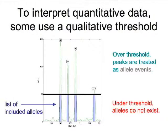How do we interpret quantitative data that has uncertainty? Some groups like to use quantitative thresholds. In that method, one threshold is applied to the data and peaks that are over threshold are treated as bona fide allele events. Those that are under threshold are discarded. The result is that the quantitative data is reduced to a list of alleles that are included.